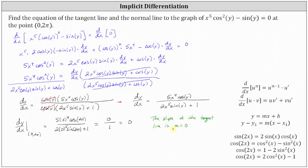If a line has a slope of zero, it's a horizontal line. A horizontal line passing through the point zero comma two pi has the equation y equals two pi. Remember, every horizontal line is in the form y equals a constant, and every vertical line is in the form x equals a constant. Using point slope form, y minus y₁ equals m times the quantity x minus x₁, with slope zero and point zero comma two pi, gives y minus two pi equals zero times the quantity x minus zero, which simplifies to y equals two pi.